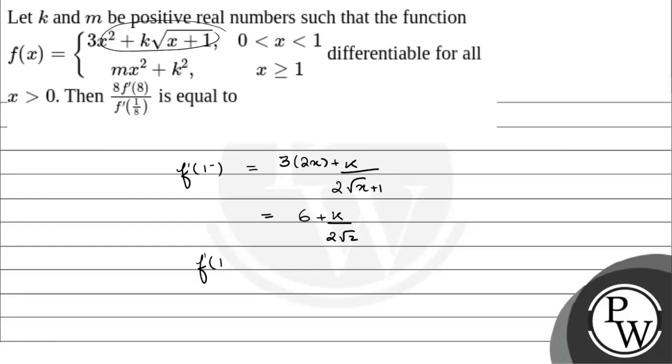And we differentiate for x ≥ 1. For this equation, we get m(2x) + 0, since k² is constant. So this gives 2m. Since the value of x is 1, we have 2m. So our second equation is 6 + k/(2√2) = 2m, since the derivatives must be equal.